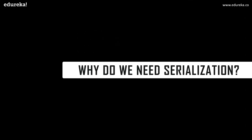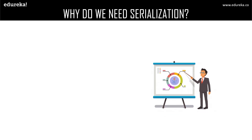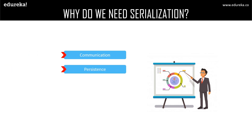Now let us move on to why we need serialization in Java. Firstly, communication: serialization involves the procedure of object serialization and transmission, enabling multiple computer systems to design, share, and execute objects simultaneously. The next reason is persistence: the state of any object can be directly stored by applying serialization onto it and stored in a database so that it can be retrieved later. Note that only the particular state of an object is stored here, not the entire object.